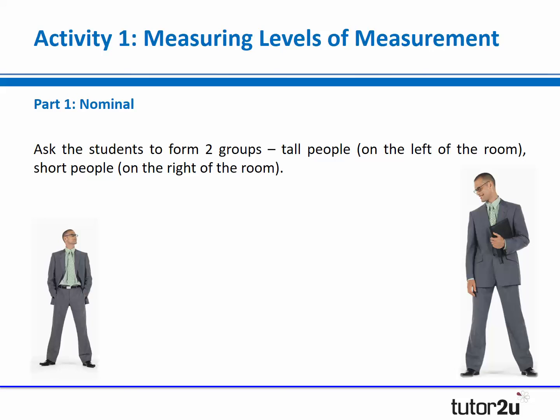The first part of this activity is where you're going to get your students to demonstrate nominal data, although you won't tell them that to begin with. It doesn't matter how many students you've got - this can work with small groups or large groups. You ask your students to form two groups: have all the tall people stand on the left-hand side of the room and all the short people stand on the right-hand side. Your class will probably start to question you, asking how tall is tall and how short is short. My advice is just to give them no further information - let them decide what is going to be their tall group and their short group.